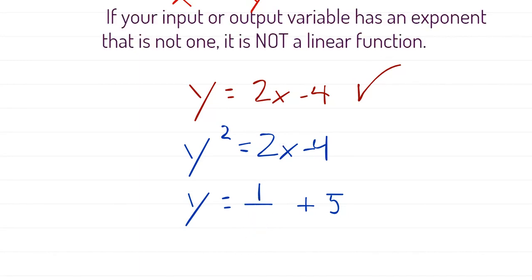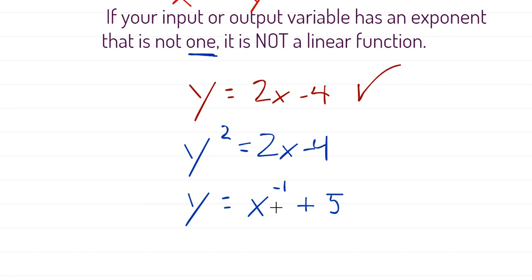Another example that tricks a lot of students: y equals 1 over x plus 5. It's tempting to say x has no written exponent, so it must be 1. But from your exponent properties, 1 over x is the same as x to the negative 1. Anything raised to something other than positive 1 means it's not a linear function — so this would not be linear.